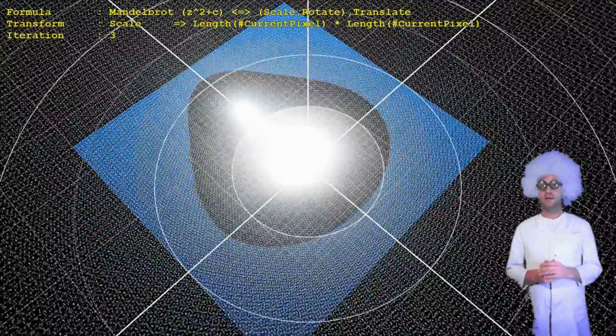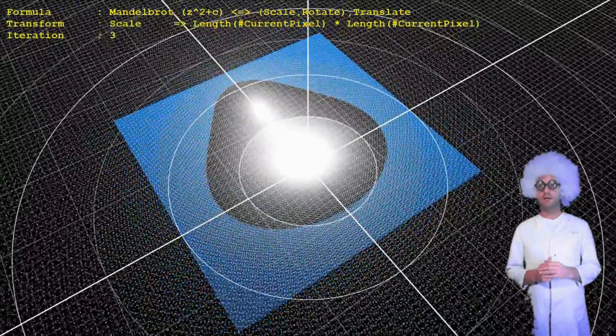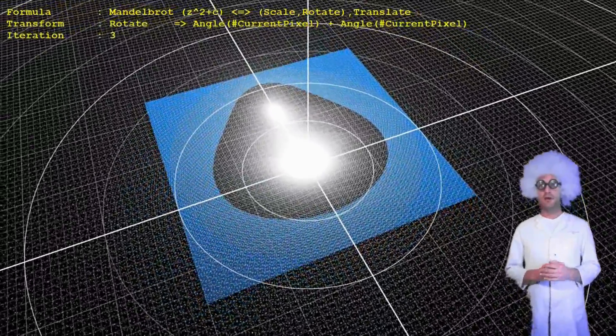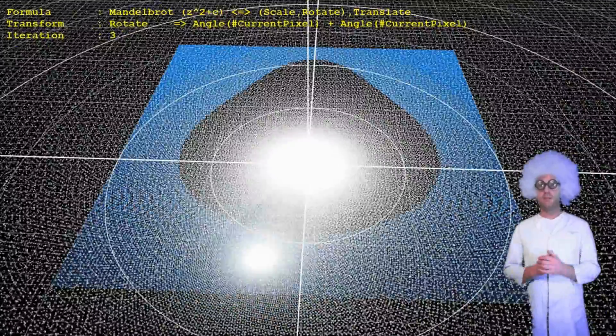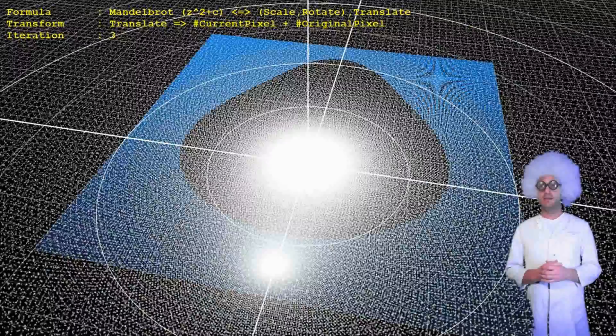The x-axis represents the real part of the complex number and the y-axis the imaginary part. We will only refer to them as x-axis and y-axis throughout the video.